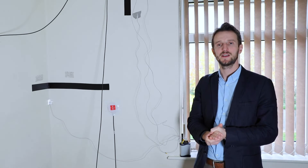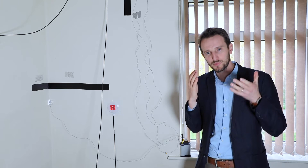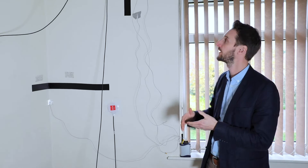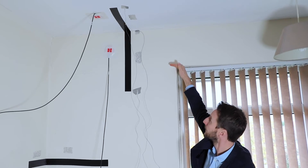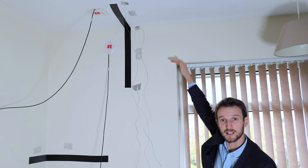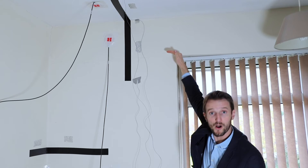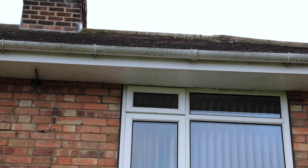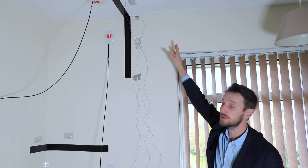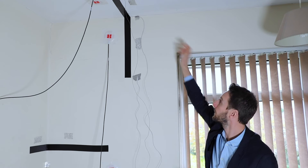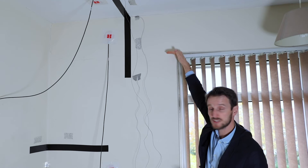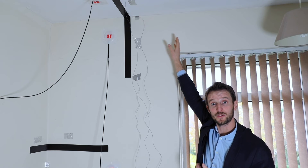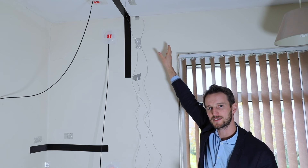Externally insulating homes is a really good way to retrofit them to improve their energy efficiency, but there are some problems and a good example is one we're investigating here. The eaves of the building are around this level and externally if the insulation was to stop here we might have a problem at the top with cold surface temperatures. We're investigating the temperatures achieved right now uninsulated, what we would achieve when insulated to here, and then if we extend the insulation up through the soffit to make sure there are no cold surfaces — we'll do those tests a bit later on.